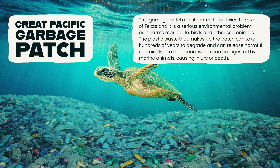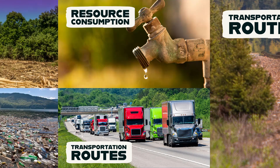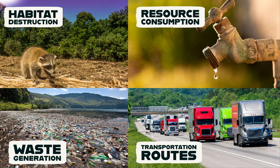The plastic waste that makes up the patch can take hundreds of years to degrade and can release harmful chemicals into the ocean, which can be ingested by marine animals, causing injury or death. Finally, transportation is another way that human settlement affects the environment. The way we get around, whether it's by car, bus, train, or bike, can have significant impacts on air quality, noise levels, and greenhouse gas emissions. For example, long railway lines and highways can divide wildlife habitats, natural areas, and agricultural land. By considering sustainable transportation options, such as public transit, biking, and walking, we can work to reduce our environmental impacts.